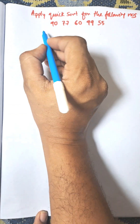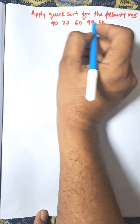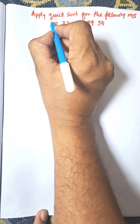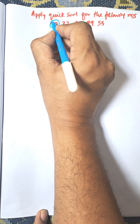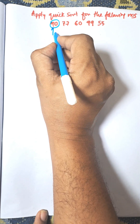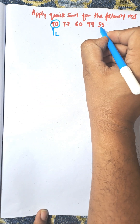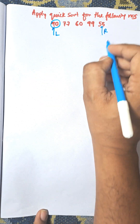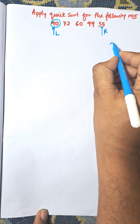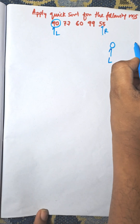This is the Quick Sort algorithm for the following list of numbers. Initially, the first number is considered as the pivot. L points to the leftmost element and R points to the rightmost element.